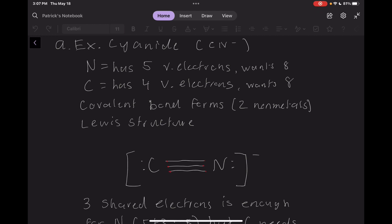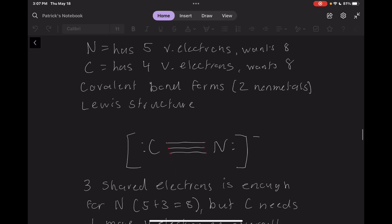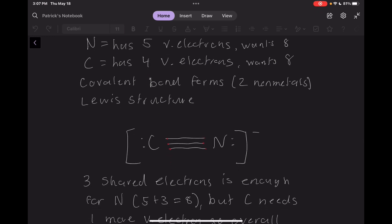A triple bond, to be exact. If we look at this Lewis structure, we'll notice that this triple bond gives three electrons to nitrogen, and since five plus three equals eight, it has its octet.